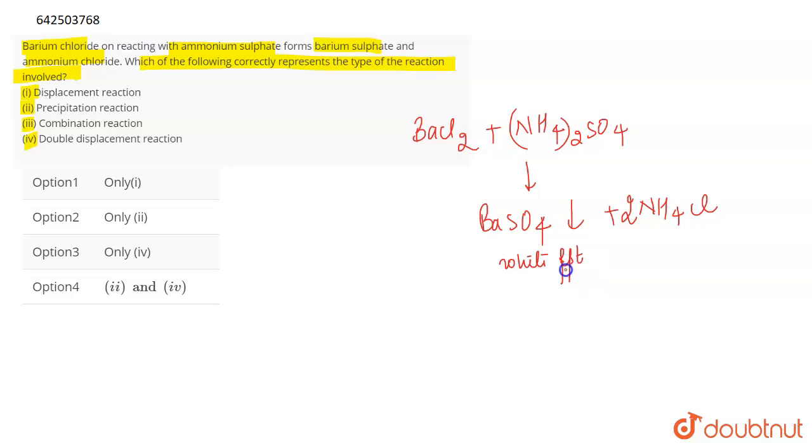What you see over here is a double displacement reaction. This reaction is actually a double displacement reaction. Why? Because the exchange of ions is taking place. If you have BACl2 and NH4 twice SO4 in the reactant side then in the product side you see that the exchange of ions has taken place. The sulfate ion comes with Ba plus 2 whereas the chloride ion comes with NH4 plus. Such type of reactions are known as double displacement reaction.